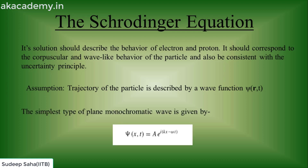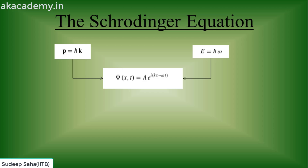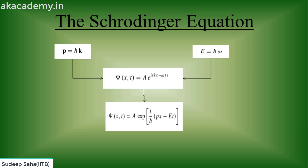To understand this, let's assume the simplest type of plane monochromatic wave, and assume that a particle's behavior is described by this one-dimensional wave equation. Now, since we know that p equals h-bar k and E equals h-bar omega, if we substitute these values, we get a specific wave equation.